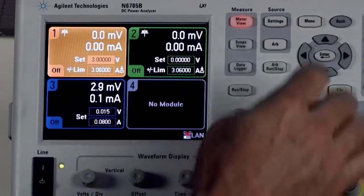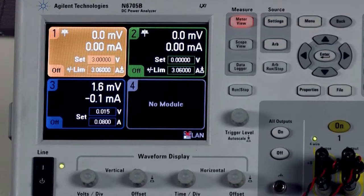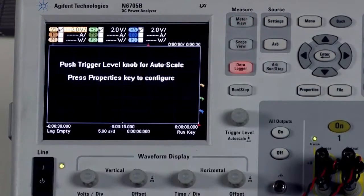Moving on to step three, we need to set the data logger and configure it. So push the data logger button and then I come over to our properties button and push that.